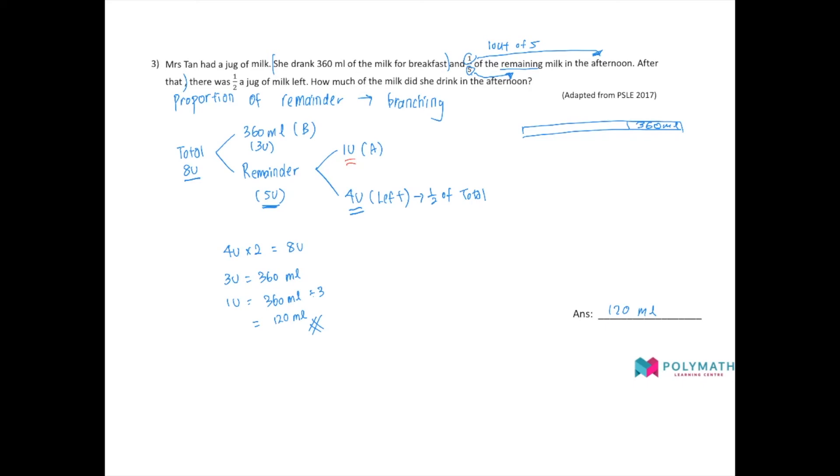Okay, so the remaining portion would be represented here. Okay, this would be the remaining portion in red. This will be the remainder after cutting 360 ml. All right, later on they say, one-fifth of the remaining milk is drank in the afternoon. So the remaining shall be cut into five equal portions and one of them is drank in the afternoon. I'll label it A. Okay, for 360 ml I can label it B.